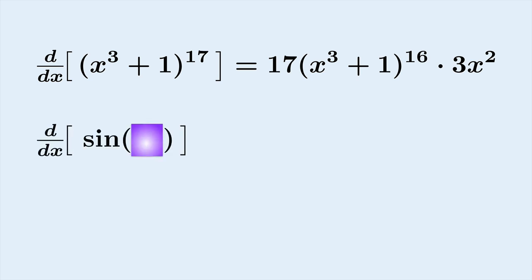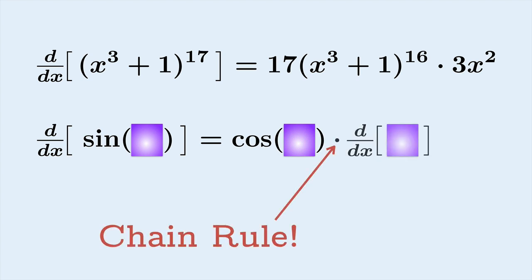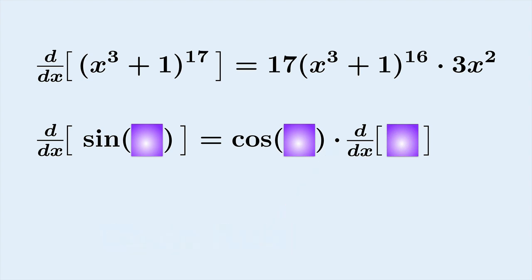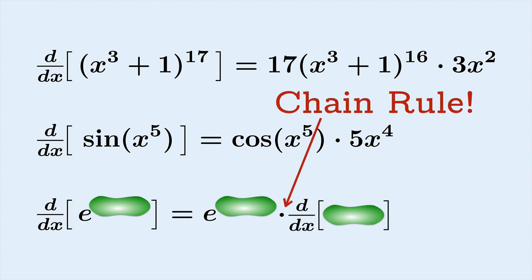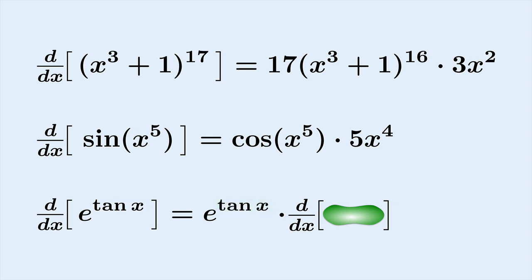Likewise, the derivative of e^(something) is e^(something), but we apply the chain rule and multiply by the derivative of that something with respect to x. If that something is tan x, then we substitute tan x and the derivative is sec²x. These are all basic chain rule problems. Even in the absence of explicit information, we could still work through them — we just needed to remember the chain rule.